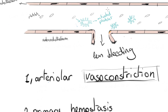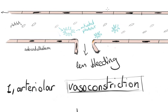Then, the platelets get activated — they increase their surface area and aggregate at the site of injury in order to form a plug, so as to block and stop the bleeding. This is our second step, or primary hemostasis: the formation of a platelet plug.